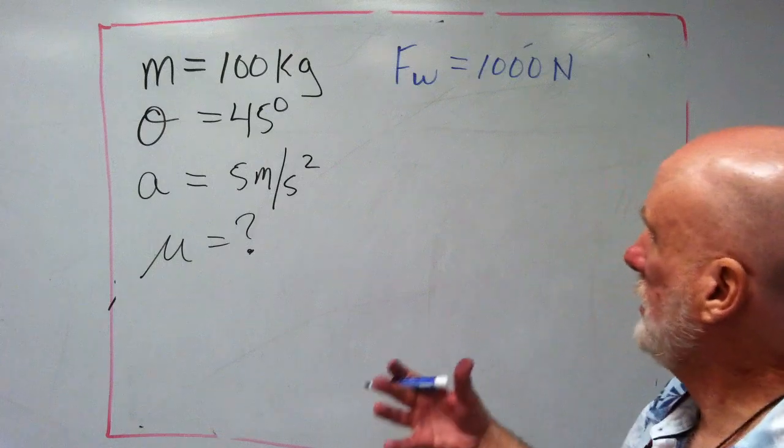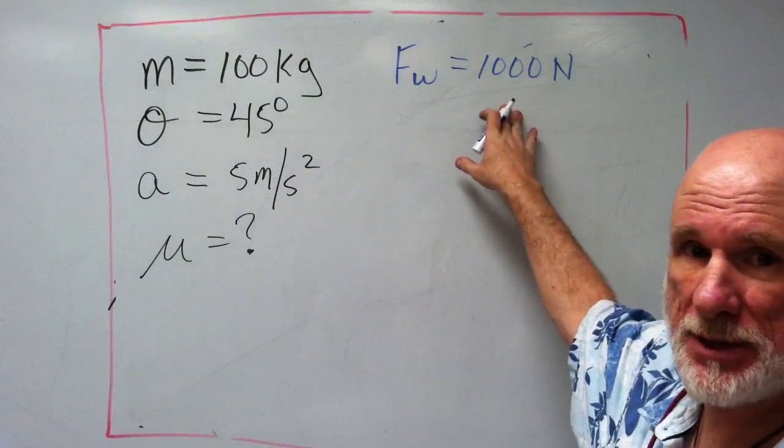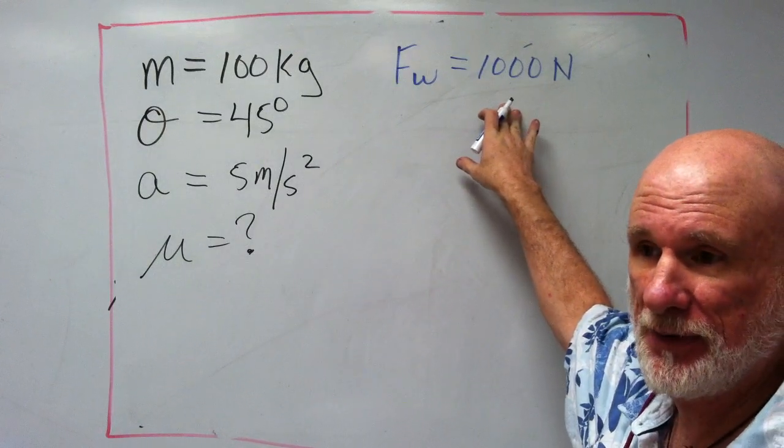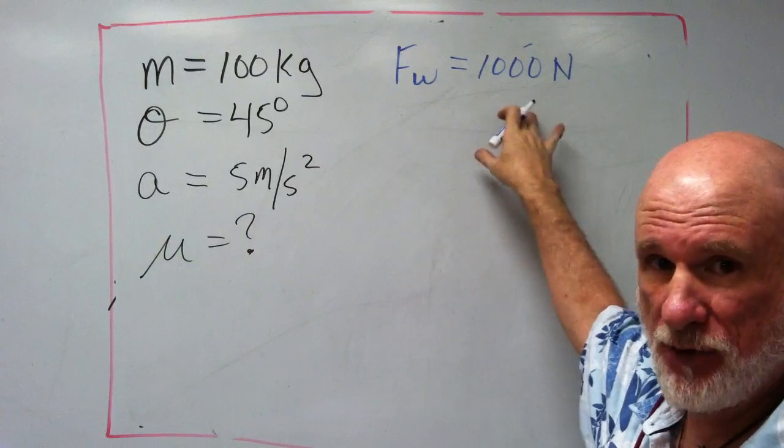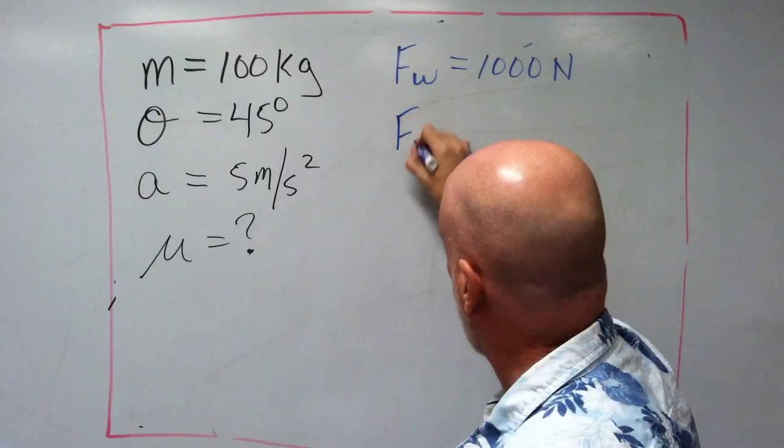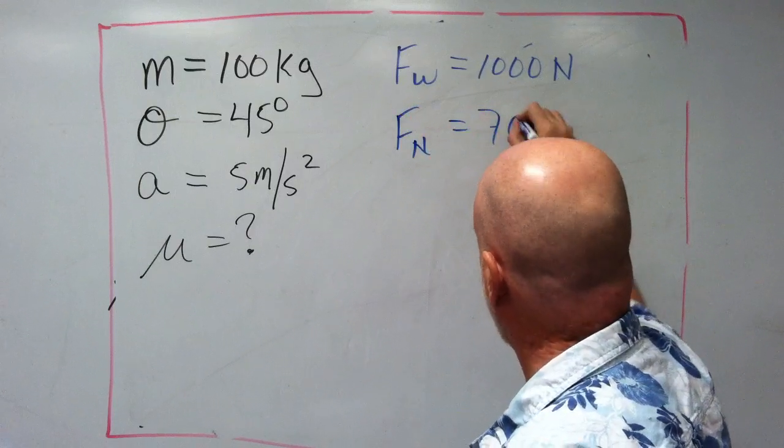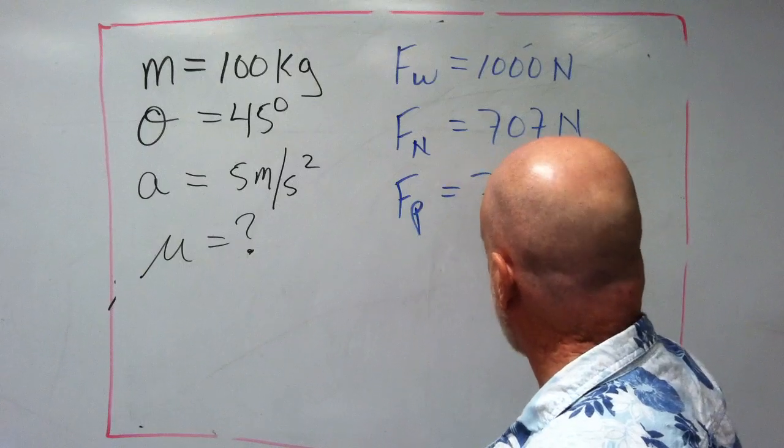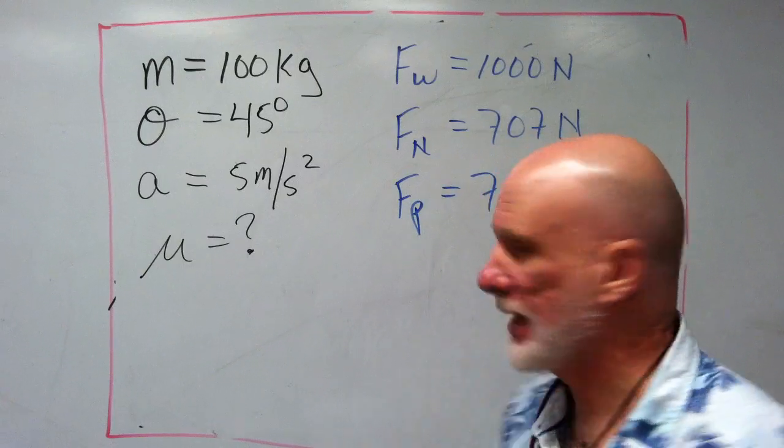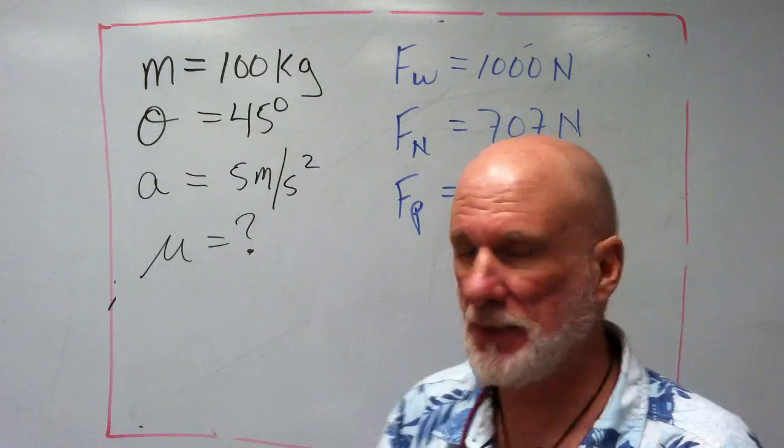1,000 times sine 45. 1,000 times cosine 45. So, Fn is going to equal 707 newtons. Fp is going to be 707 newtons. So, they're easy. That's easy.